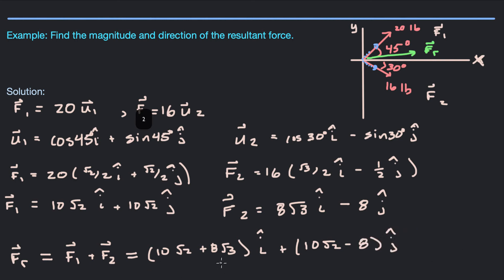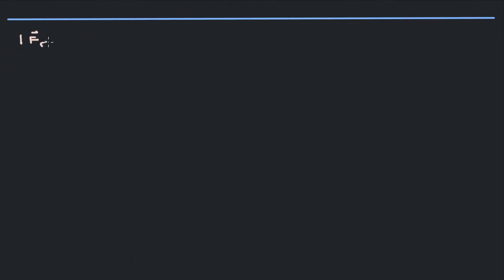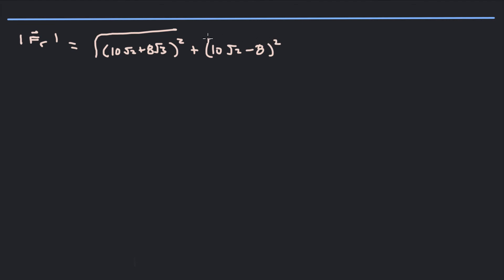So that is the resultant force in component form, but it doesn't look very pretty and it's not easy to visualize. It's going to be easier to visualize if we have the magnitude and the direction angle. The magnitude of FR is just the square root of the sum of the squared components: √[(10√2 + 8√3)² + (10√2 − 8)²]. That turns out to be about 28.66 pounds. The forces are acting together — they're not canceling each other out, and they are acting together to produce a larger force than either one of the individual forces.